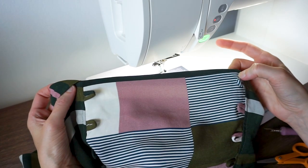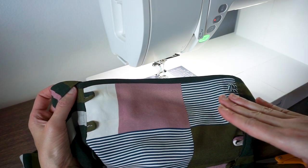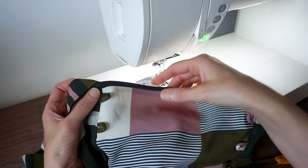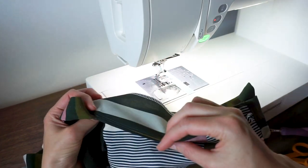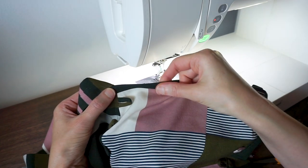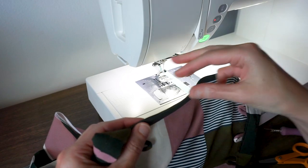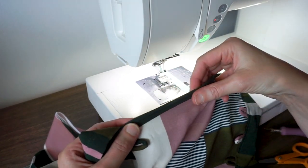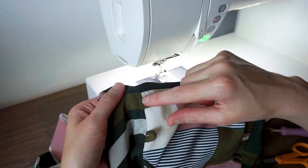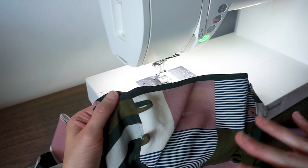Now we're going to make the casing for the elastic that goes at the top of the back center bodice. To do this we will just topstitch through the center back and the facing one half inch from the top edge. You want to make sure you have this pressed nicely so that everything lines up. We'll start right from this seam line and go to the other seam line and backstitch at both sides.